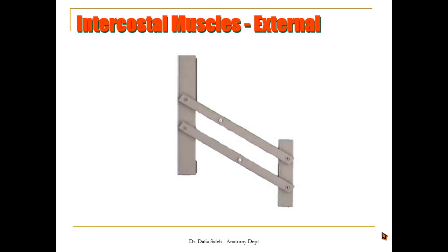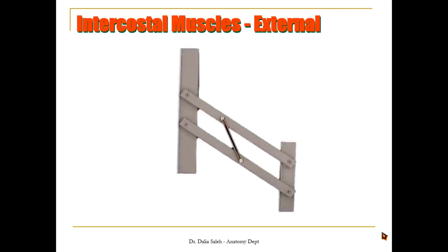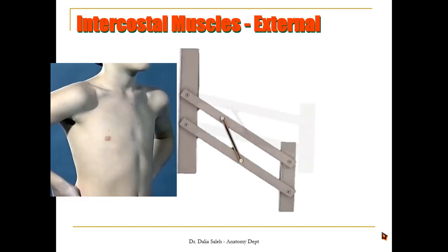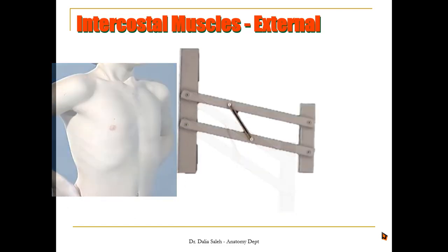When they contract they elevate the ribs, thus helping in inspiration. In this simple model we can see how the ribs move. If we consider this is the vertebral column and this is the sternum and these are two consecutive ribs, this is the direction of the external intercostal muscle, attached from the lower border of the rib above to the upper border of the rib below. When this muscle contracts it will pull the lower rib upward, thus elevating the ribs and increasing the transverse diameter of the thorax during inspiration.